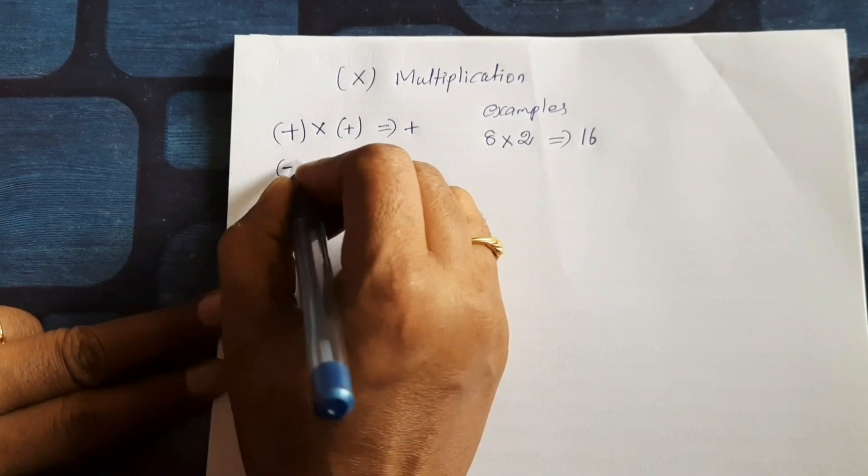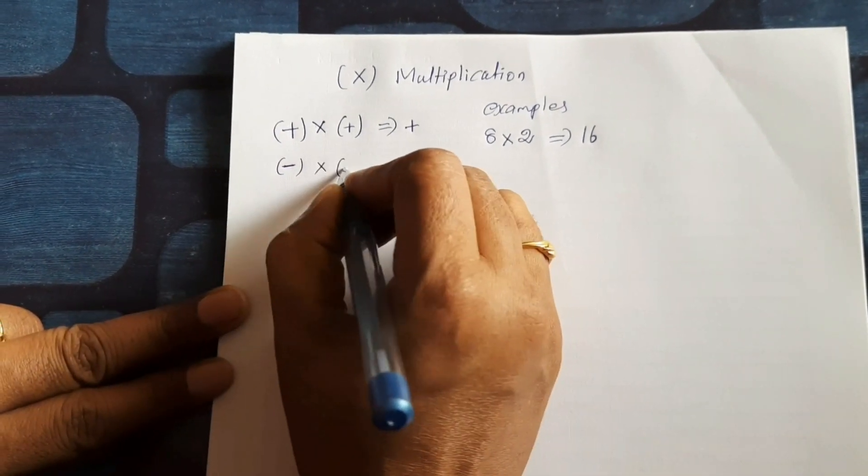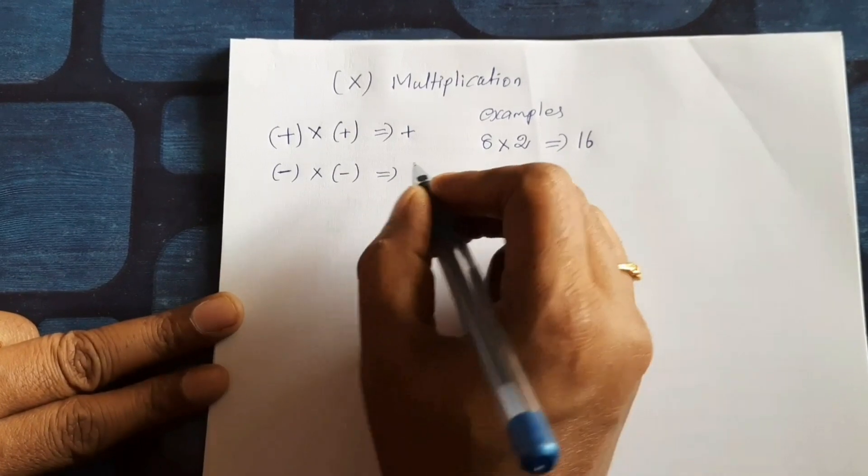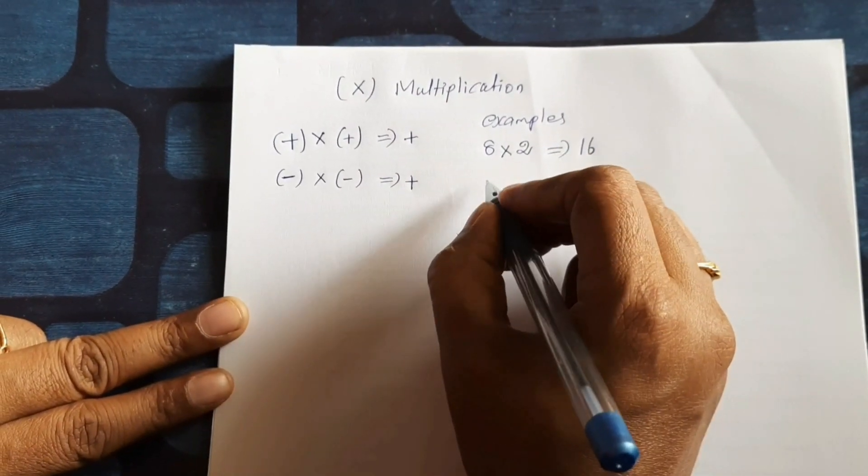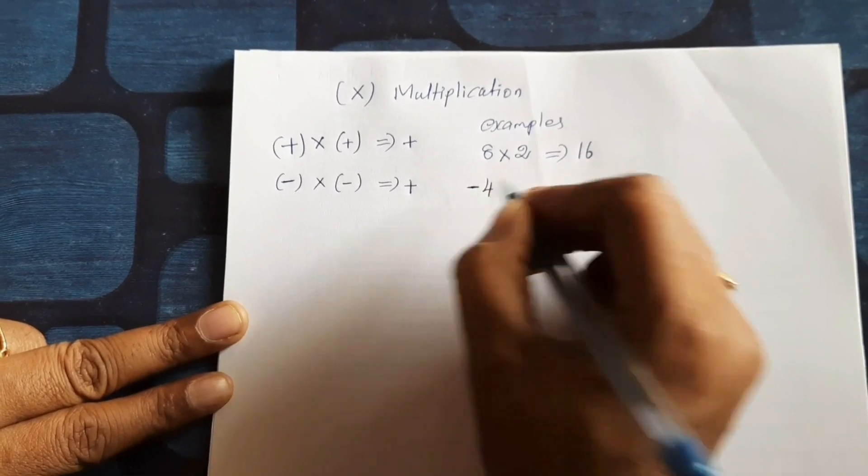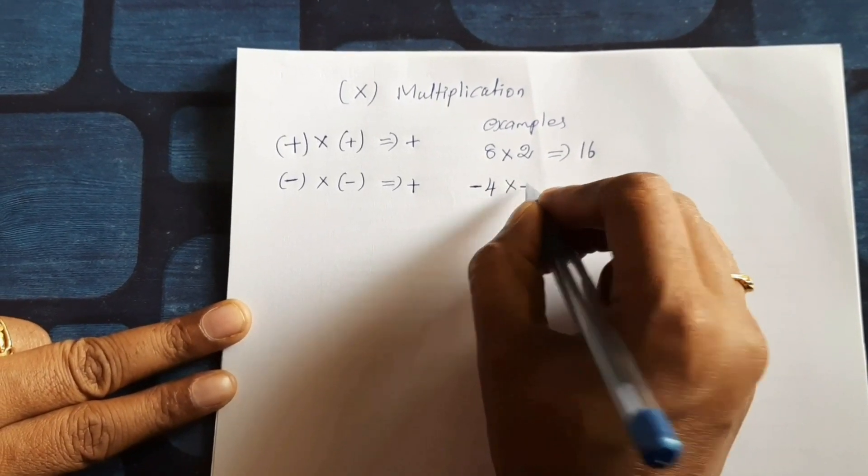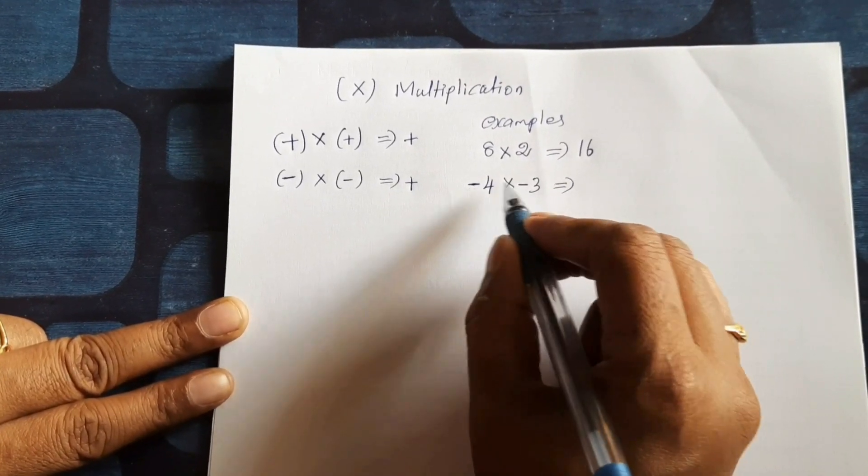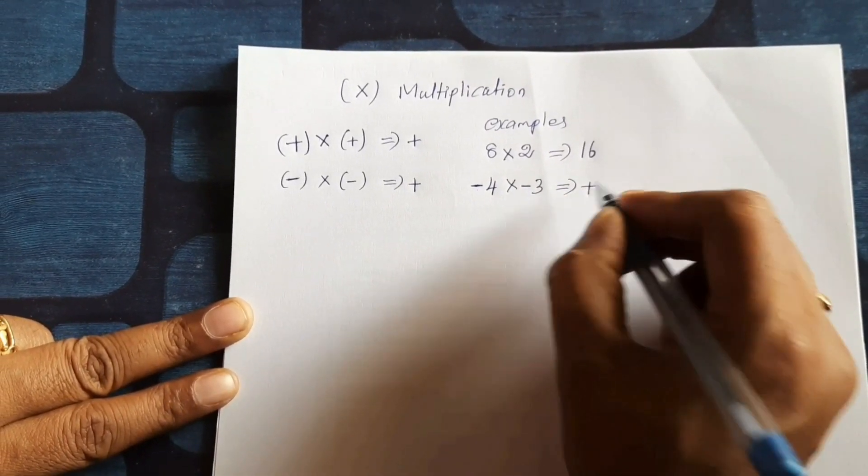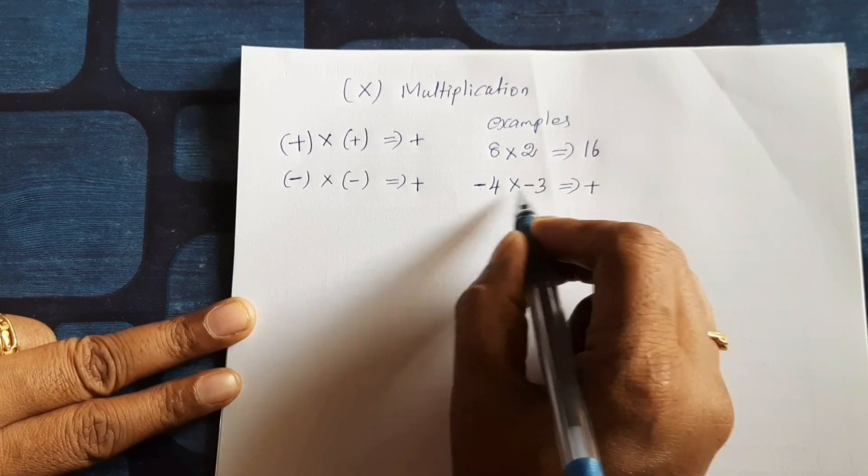Example: minus 4 into minus 3 gives minus into minus plus, 4 into 3, 12.